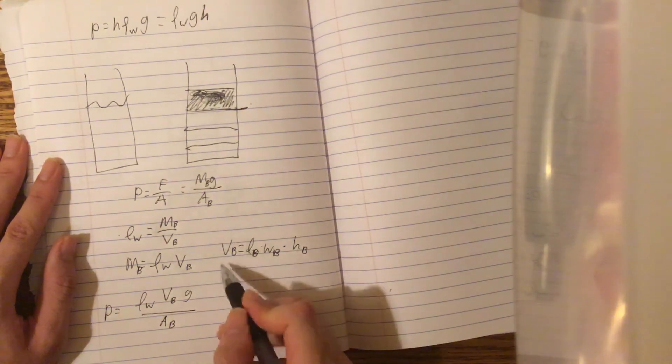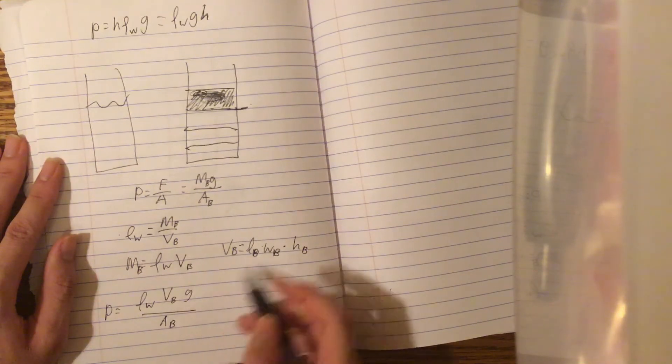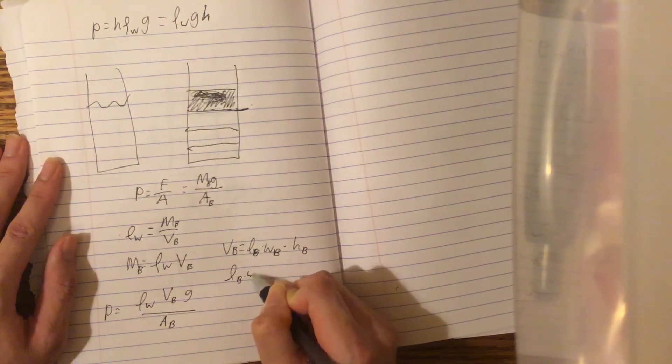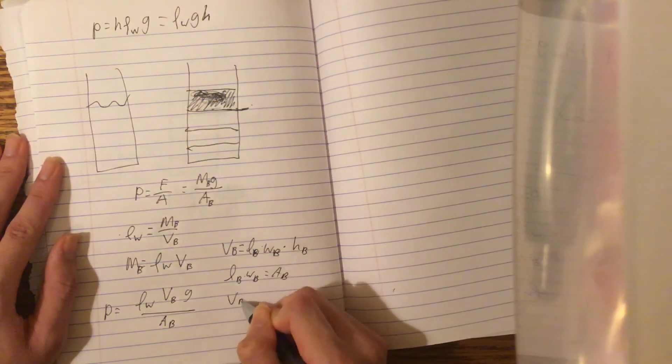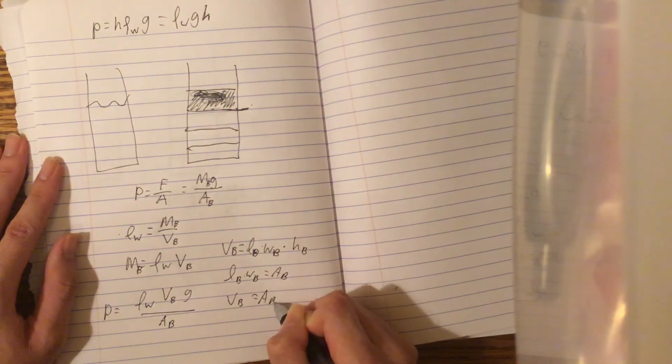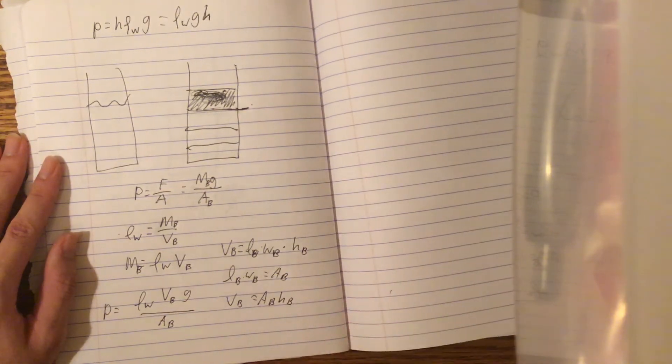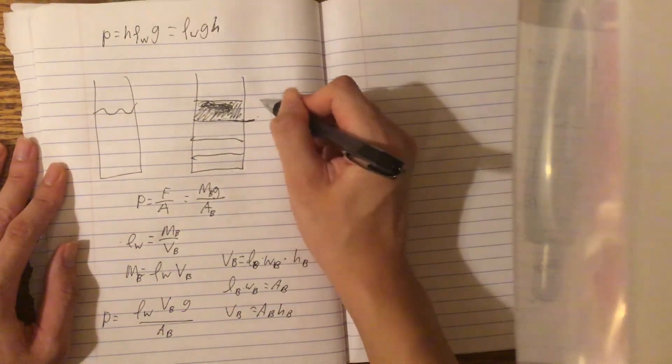Now, if we plug in this volume formula, we also know that the length of the block times the width of the block equals the area of the block. So the volume of the block just equals the area of the block times height of the block. So this is the height of the block.